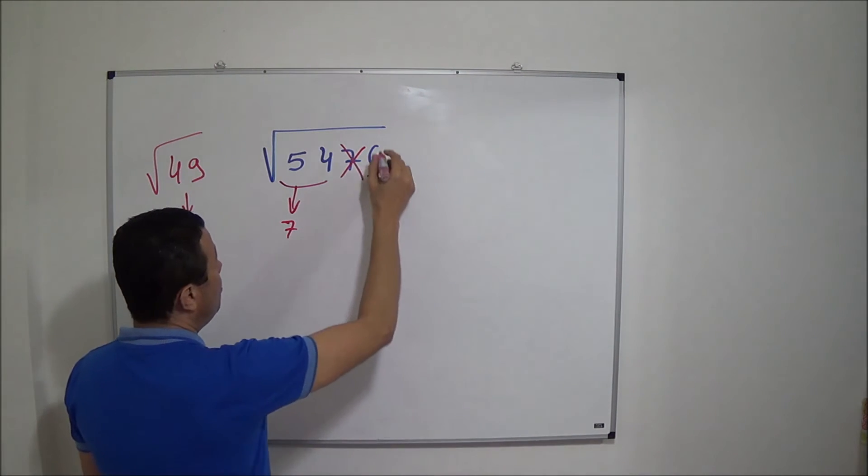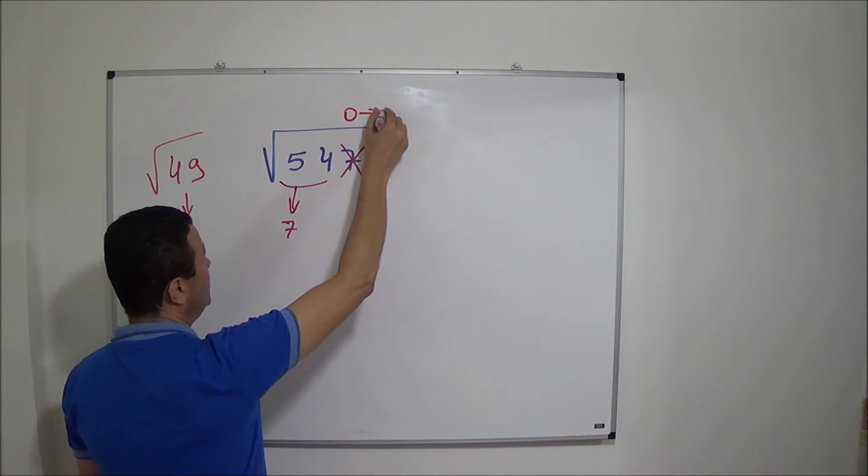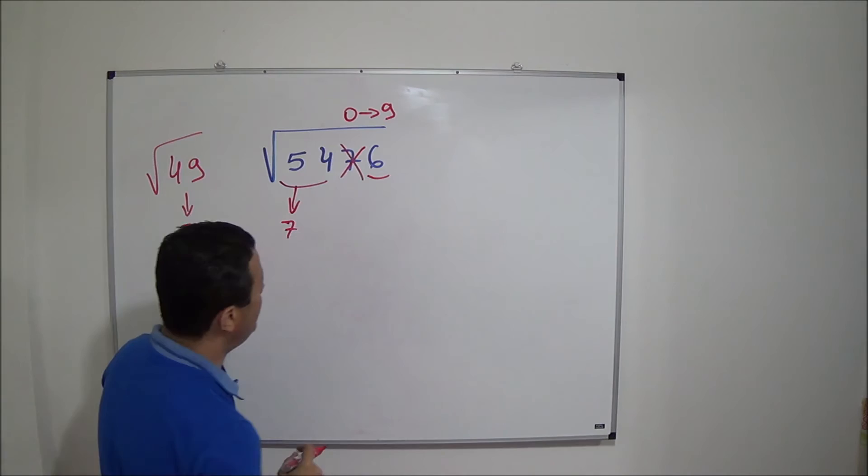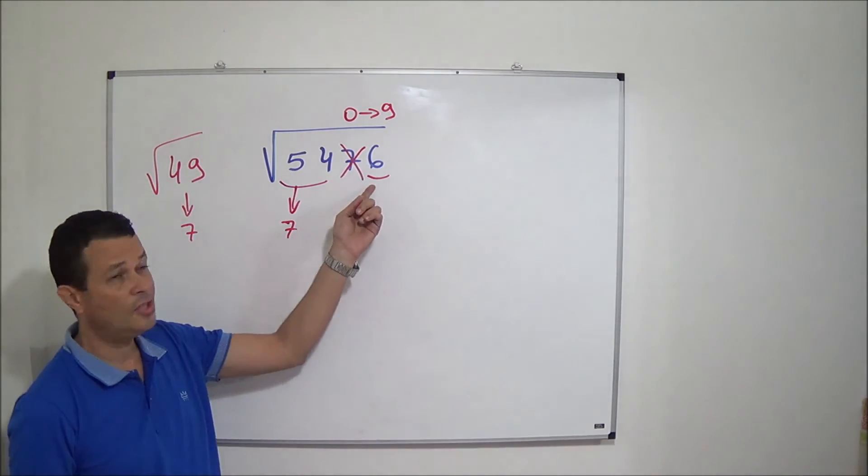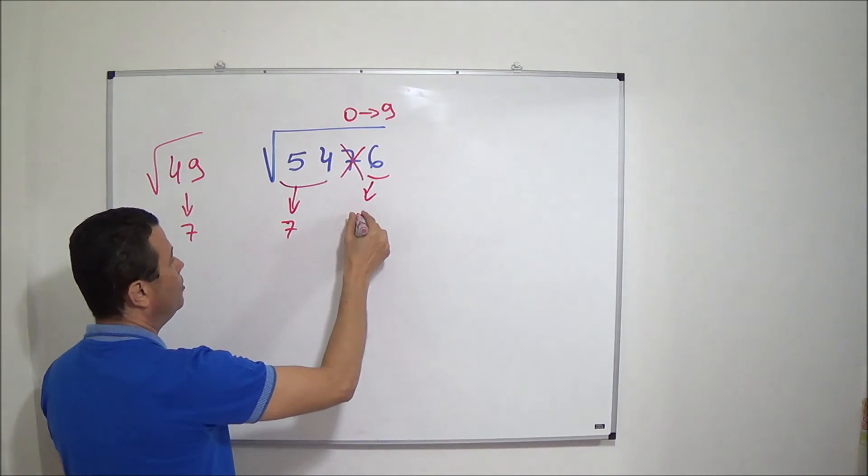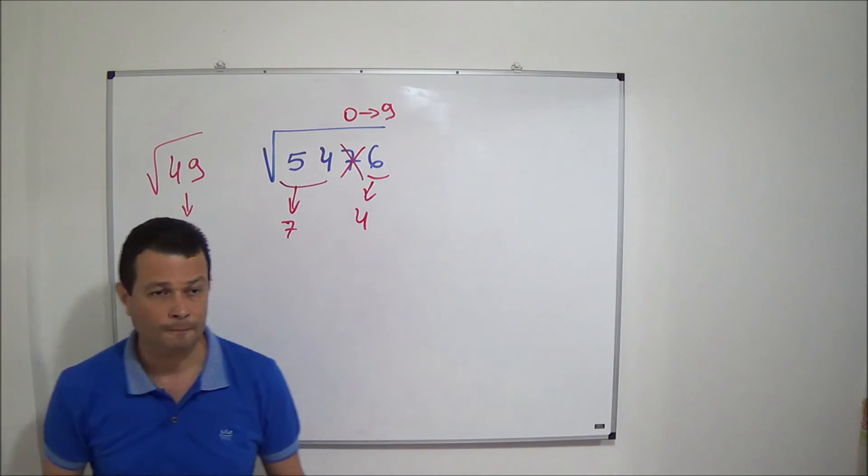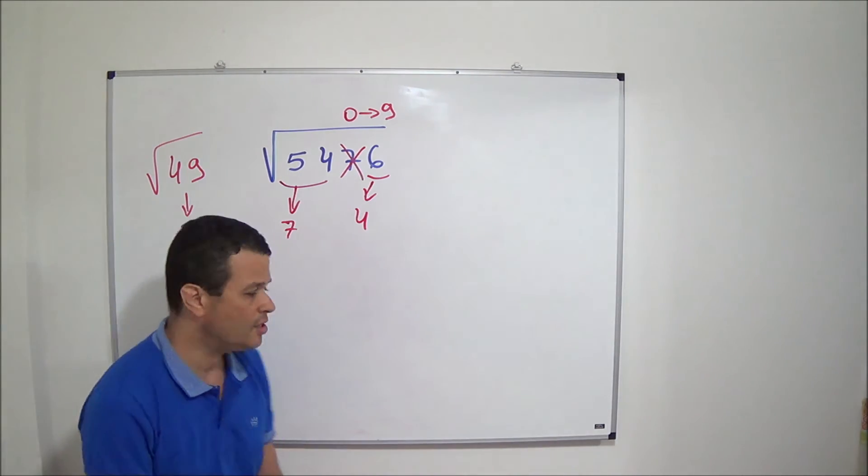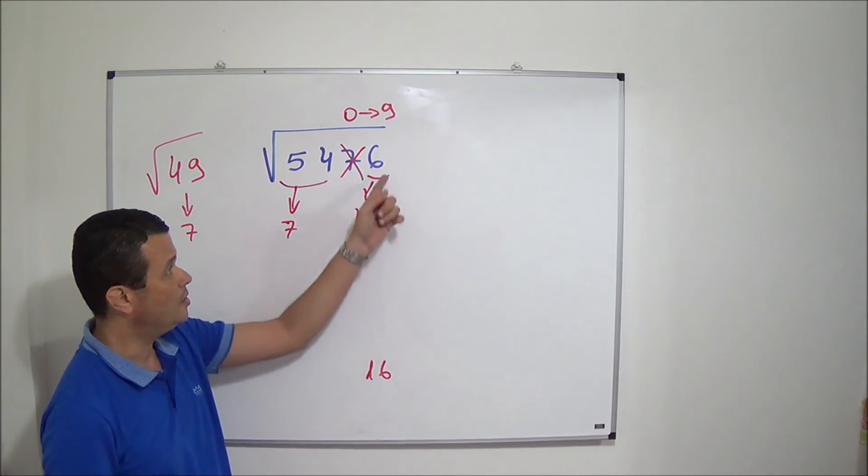Now, you have to find out a number from 0 to 9 that multiplied by itself ends in 6. We have here number 4. Because 4 times 4 is equal to 16. And 16 ends in 6.